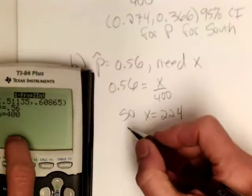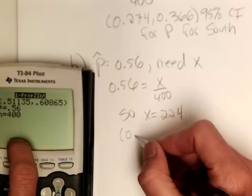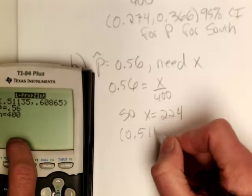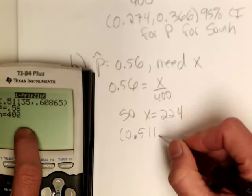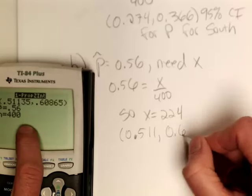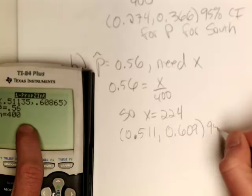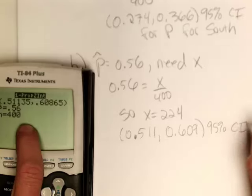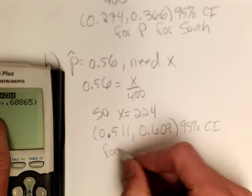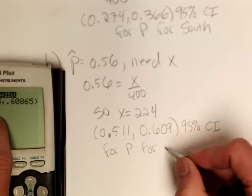So now I'm going to round to three decimal places. So 0.511 up to 0.609. So that's a 95% confidence interval for P for the folks in the west.